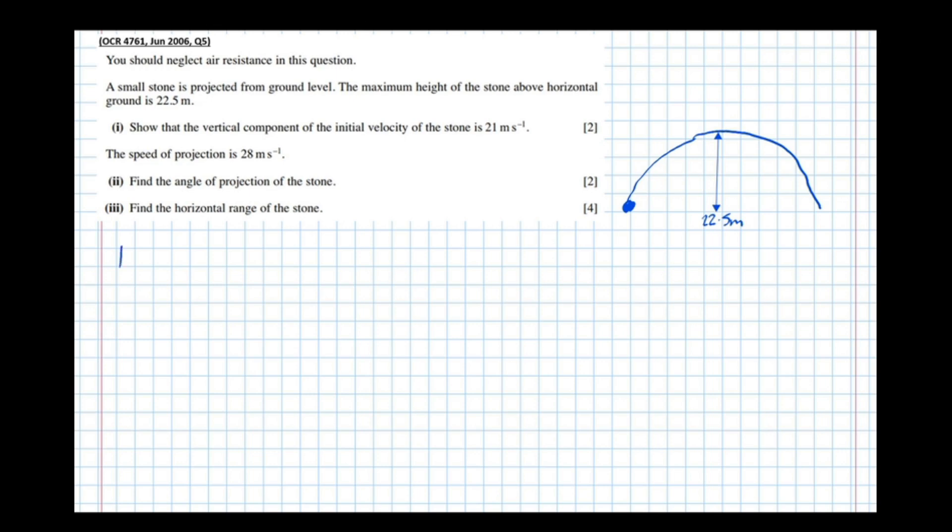Right, so we're only considering vertical motion here. So I've drawn an up arrow, that's my positive direction. So S, U, V, A, T. The displacement when it's at its maximum height is 22.5.